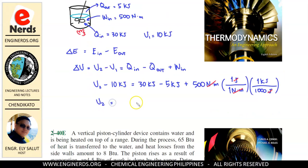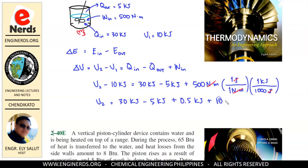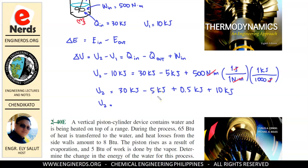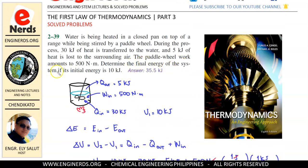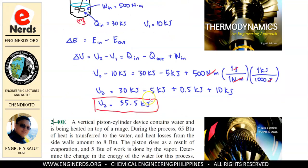So U2 equals — transposing 10 kJ to the right side — 30 kJ minus 5 kJ plus 0.5 kJ plus 10 kJ. That gives us 25 kJ plus 0.5 kJ plus 10 kJ, which equals 35.5 kJ. So this is our final answer for problem 2-39: the final energy of the system is 35.5 kJ. We got the right answer.